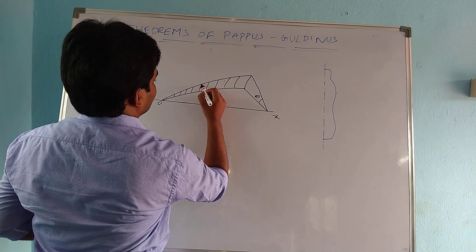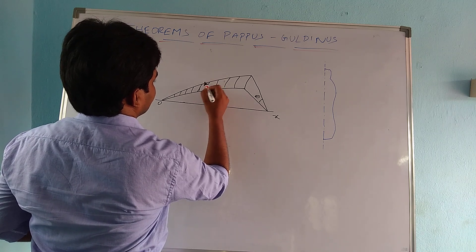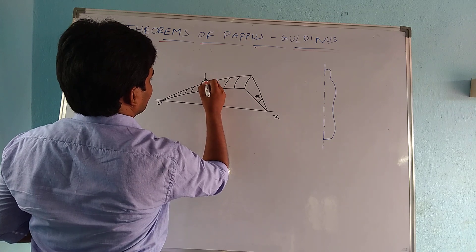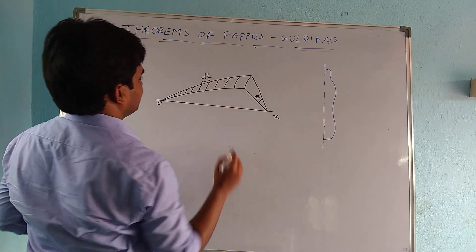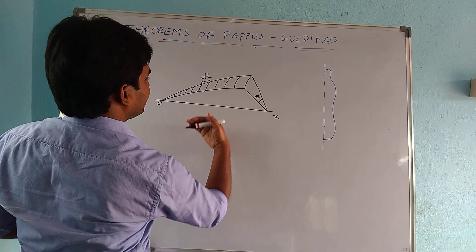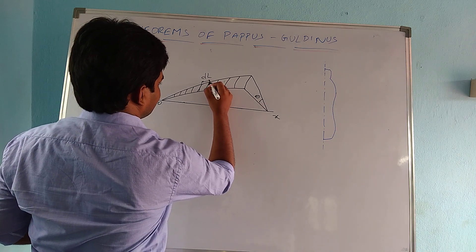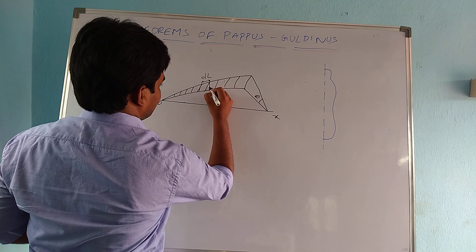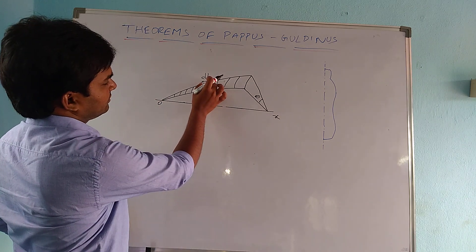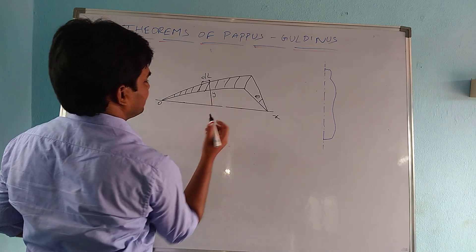So for this, I am just taking a small strip. I am taking a small length dL. Now we have rotated for angle theta. Just assume it is the centroidal distance of this small length with respect to the x-axis, so I am taking this as y.